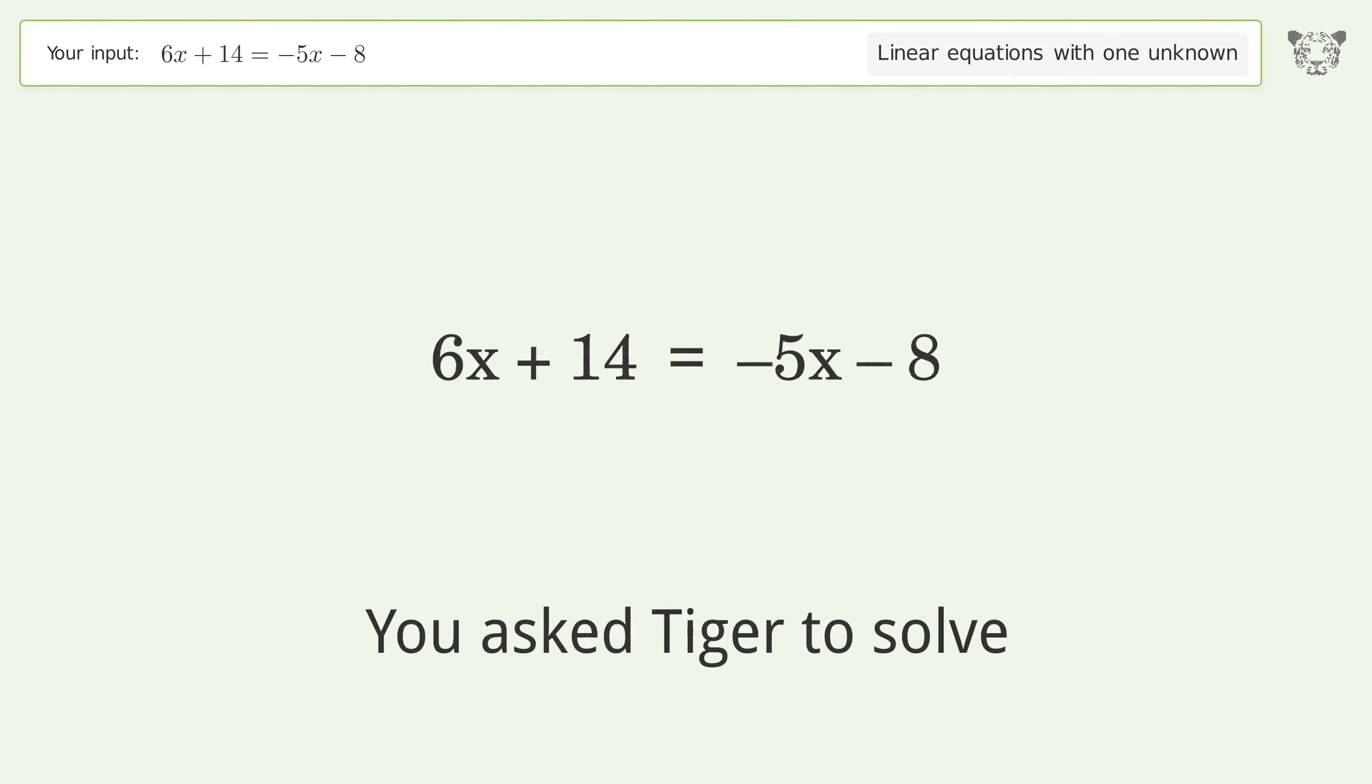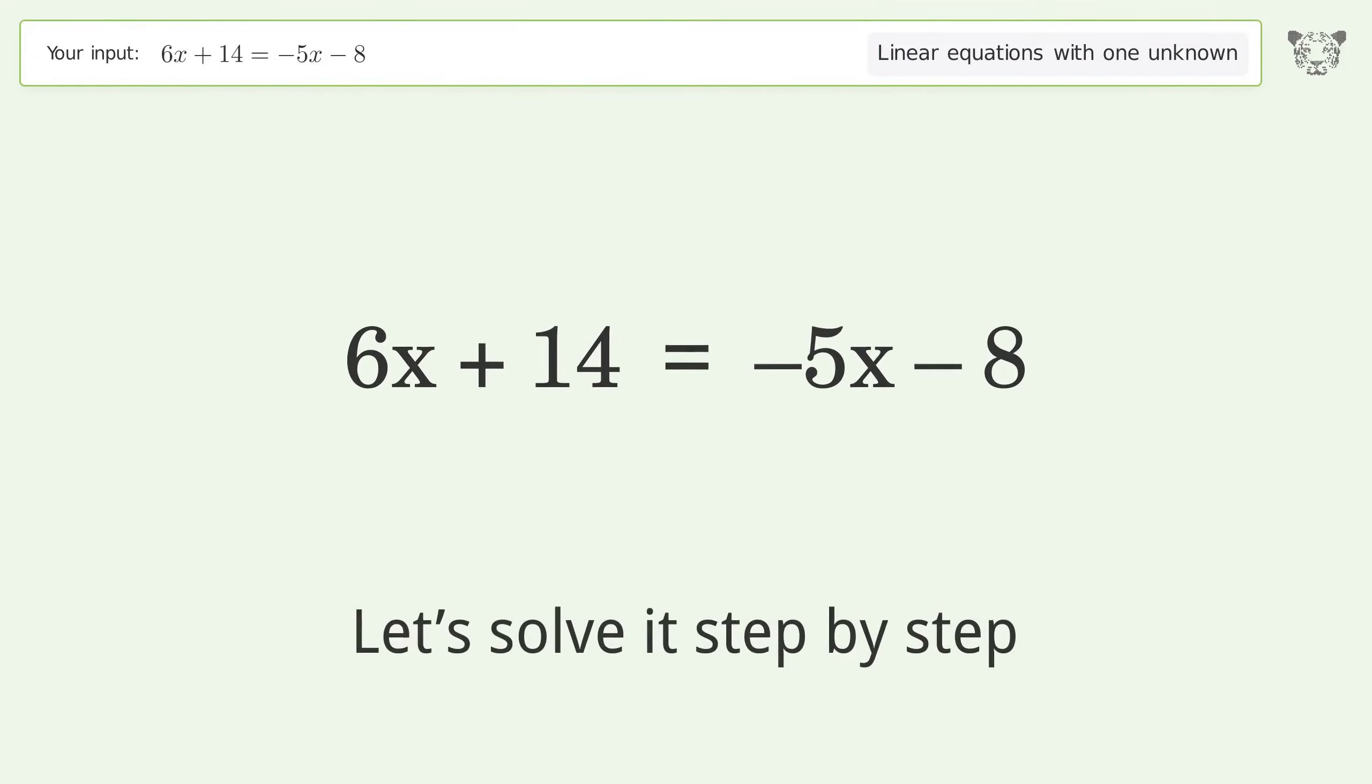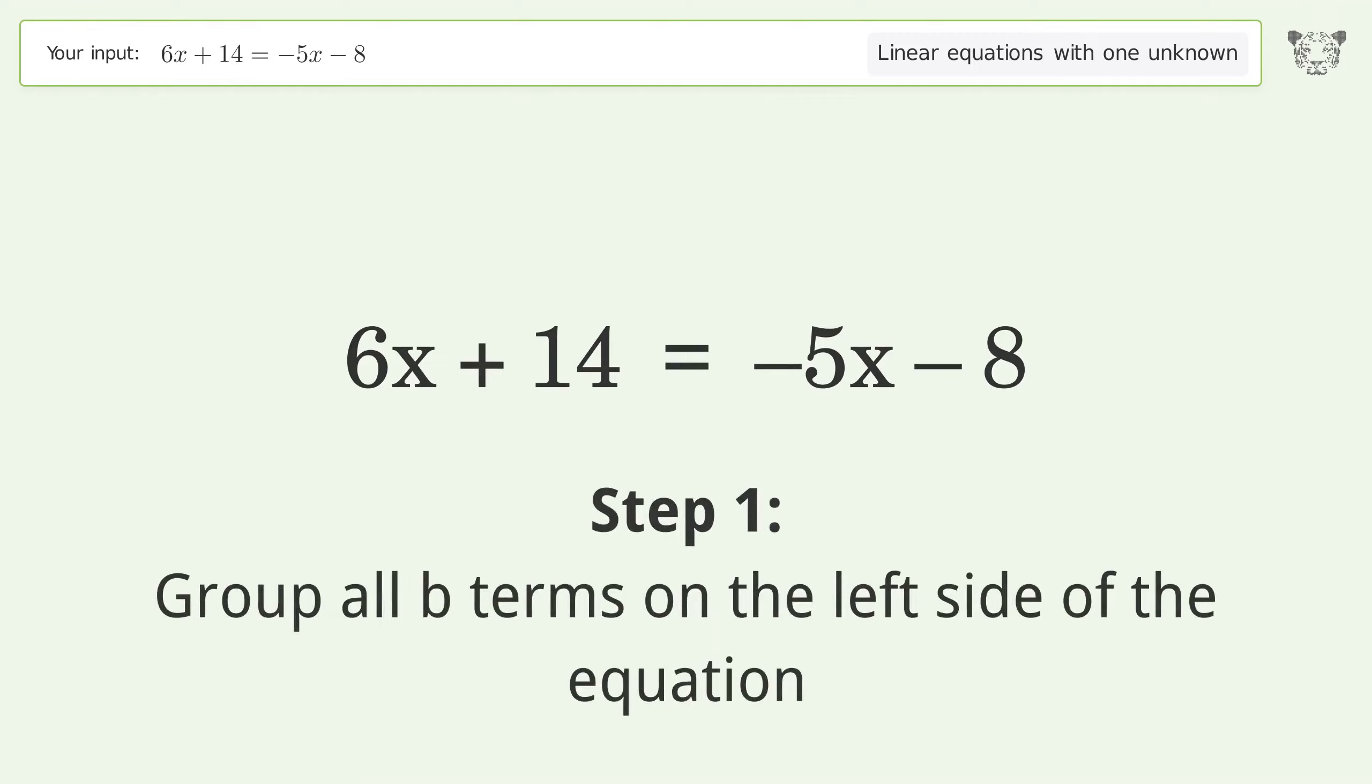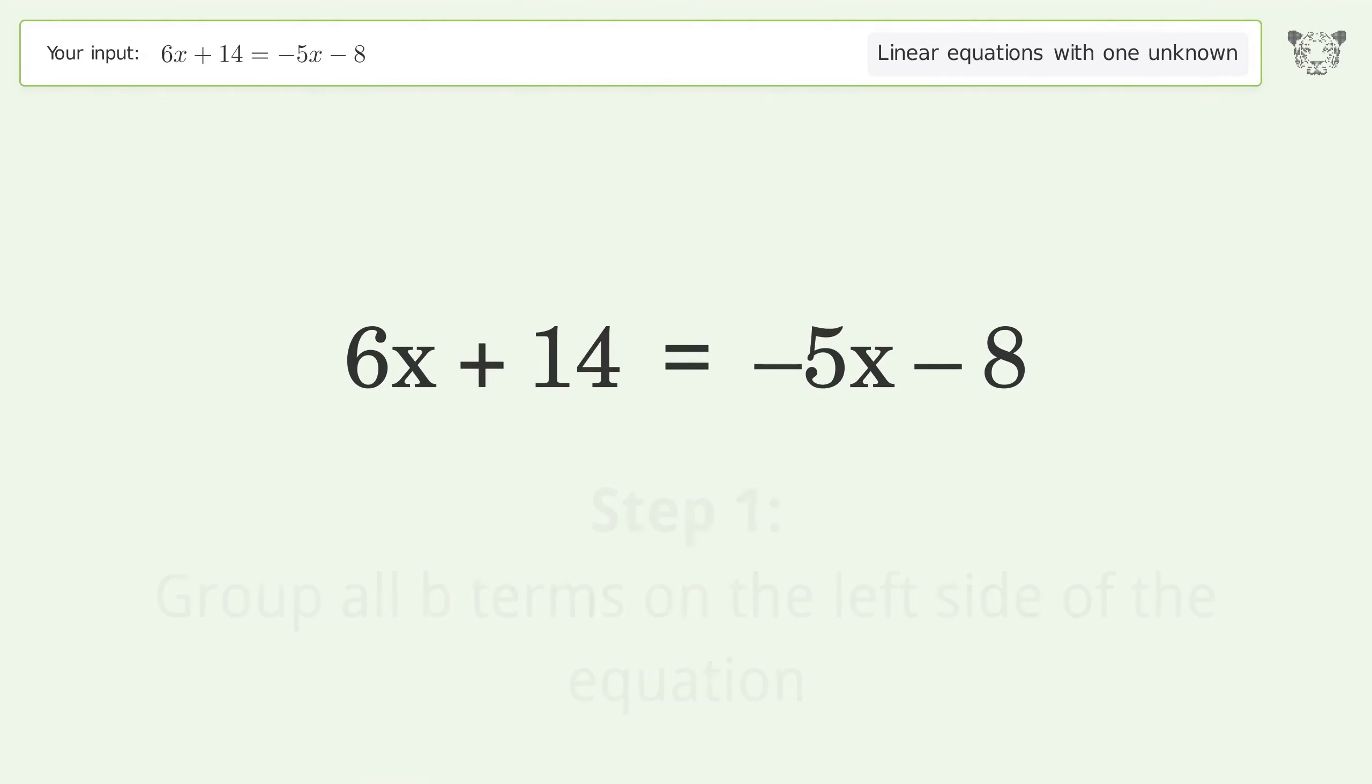You asked Tiger to solve this, which deals with linear equations with one unknown. The final result is x equals negative 2. Let's solve it step by step. Group all x terms on the left side of the equation. Add 5x to both sides.